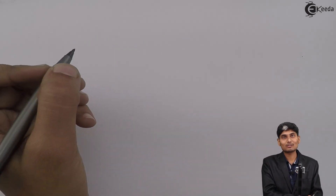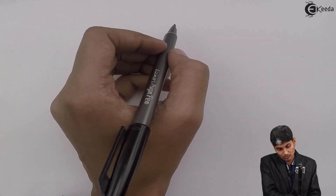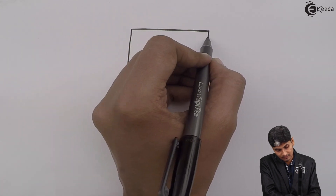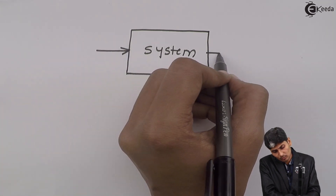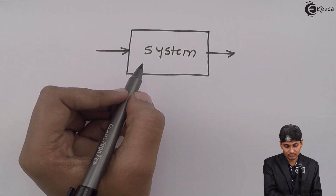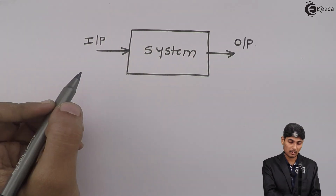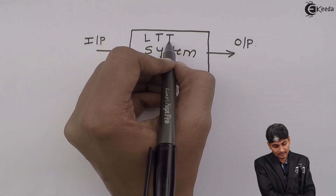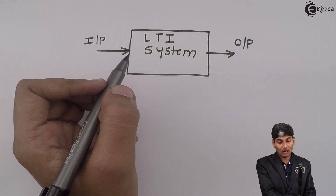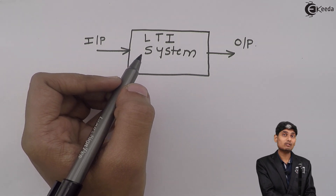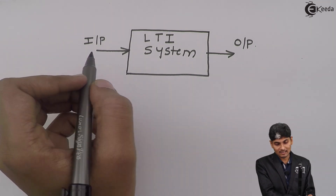Hi friends, let us today understand how LTI systems are represented. If I have a system to which I give a certain input, it will produce an output. If I don't know what the system does or how it functions, the way to find out is to apply known inputs to it and see what the output is.